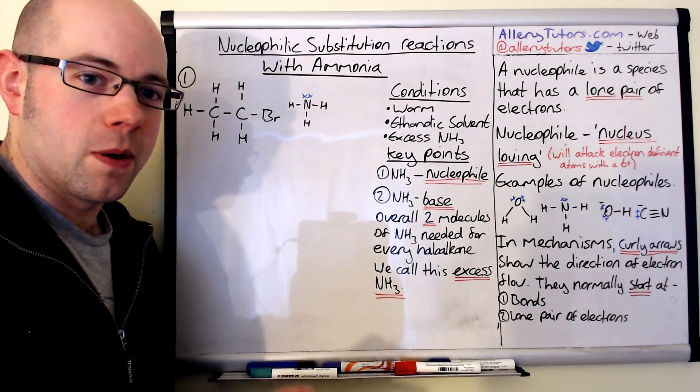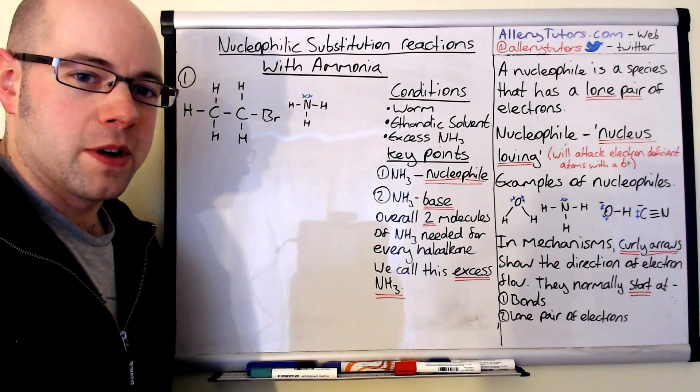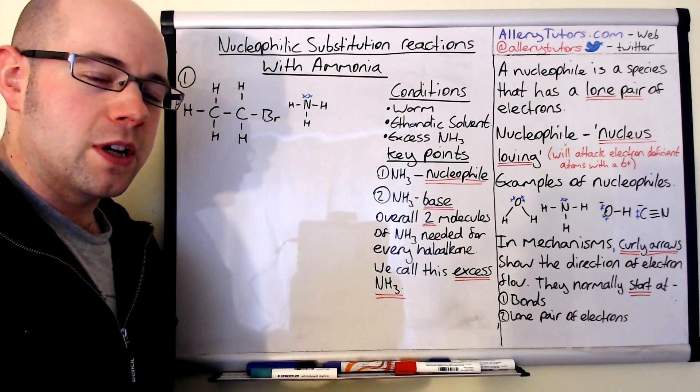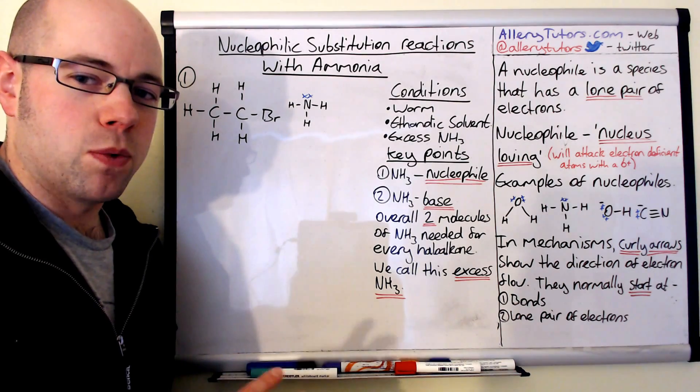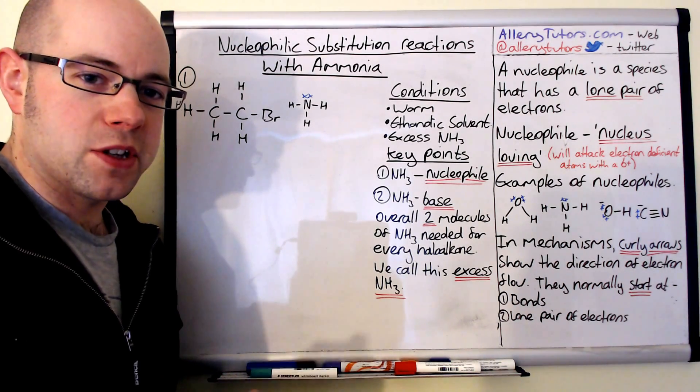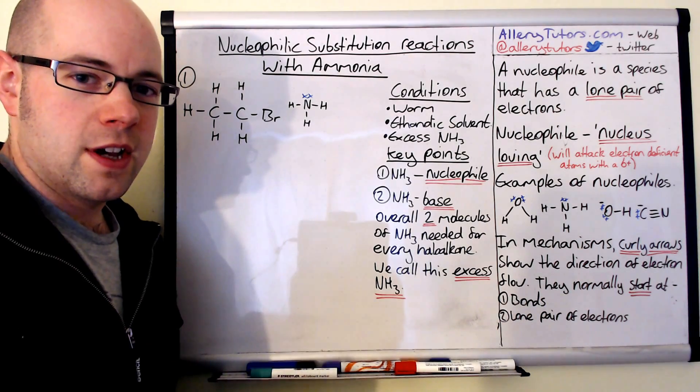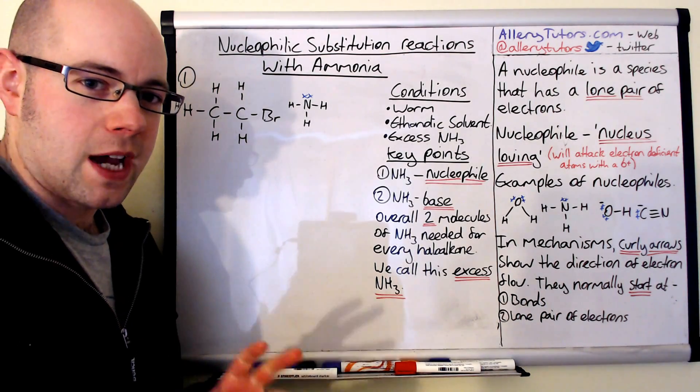So what we're going to do is basically show you the reaction with ammonia with a haloalkane. I'm going to explain briefly what a nucleophile is and what we mean by a mechanism and the curly arrows that are involved. We're going to go through the conditions of this reaction as well because it can be quite complex.